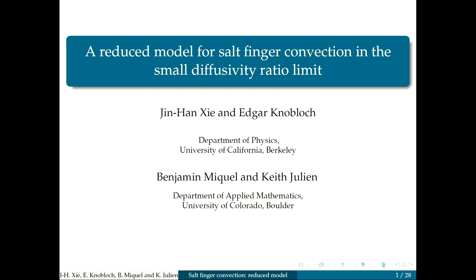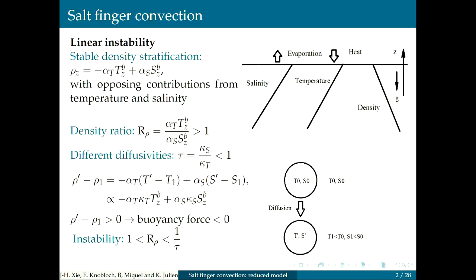Let me explain the basic physics behind this. I am imagining a situation where I have a linear salinity profile. The salinity increases from bottom to top, for example, due to evaporation in the equatorial regions. I also have a temperature that increases linearly from bottom to top — so it's cold at the bottom, warm at the top — in such a way that the overall density, which has contributions from both the temperature and the salinity, is still decreasing upward. So this is a so-called statically stable situation; it doesn't overturn.